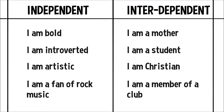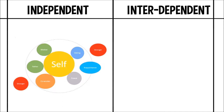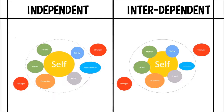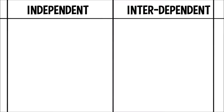Self-construal refers to how you define yourself. With independent self-construal, self-definition is thought to come from personal attributes, as the self is identified as separate from others. With interdependent self-construal, self-definition is thought to come from key relationships, roles, and group memberships, as the self is identified in relation to others.